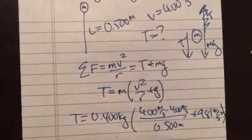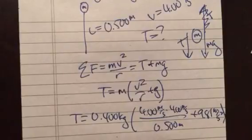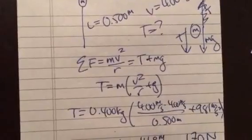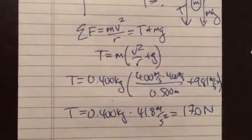Times 0.4 is going to be 16, 17-ish newtons. Kilograms meters per second squared. It's going to be 17 newtons or so.